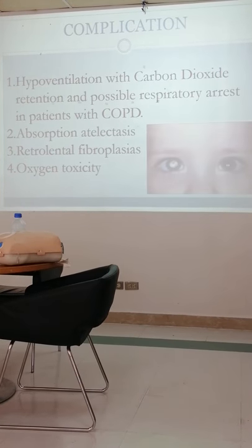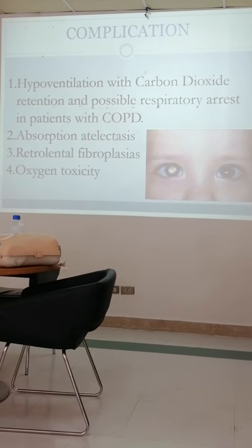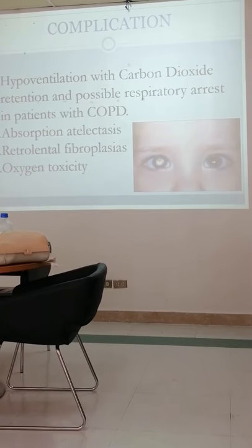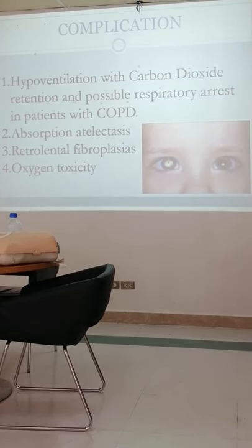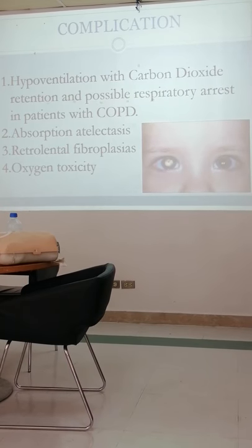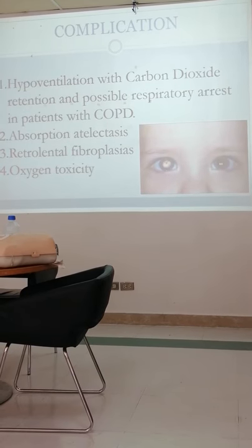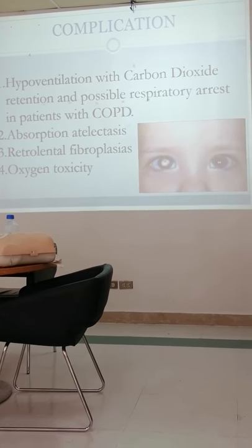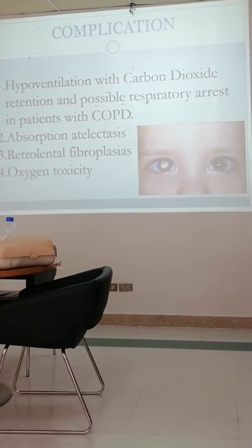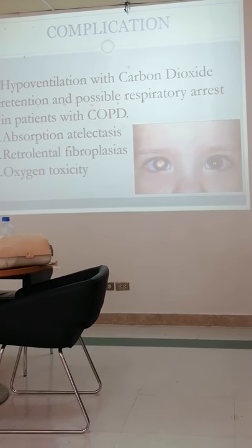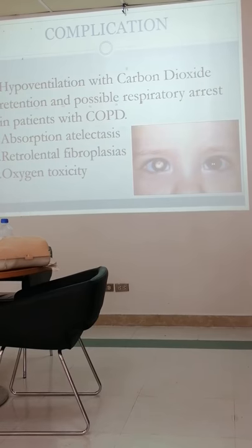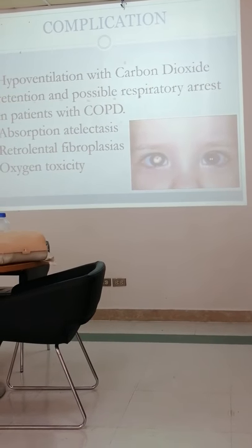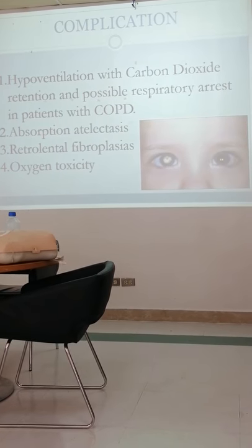We also have oxygen toxicity, which is what causes retrolental fibroplasia. This is very common in babies born immature or with premature lungs. We have no choice but to support them with oxygen for days or even weeks. The problem is that if this baby is on long-term oxygen support, their eyes can be affected. But we don't have a choice — we give oxygen to keep the baby alive, even knowing the retrolental fibroplasia risk.